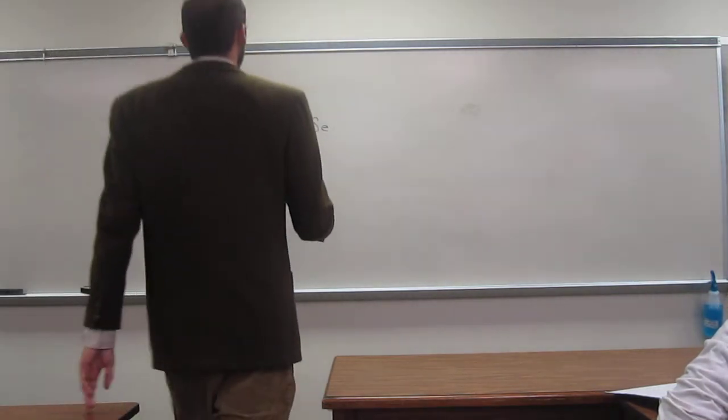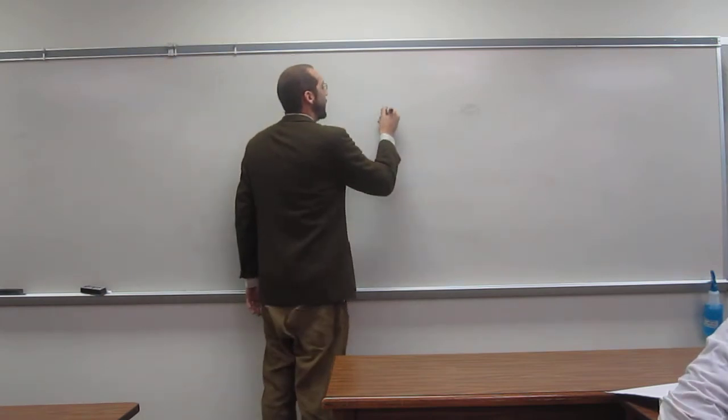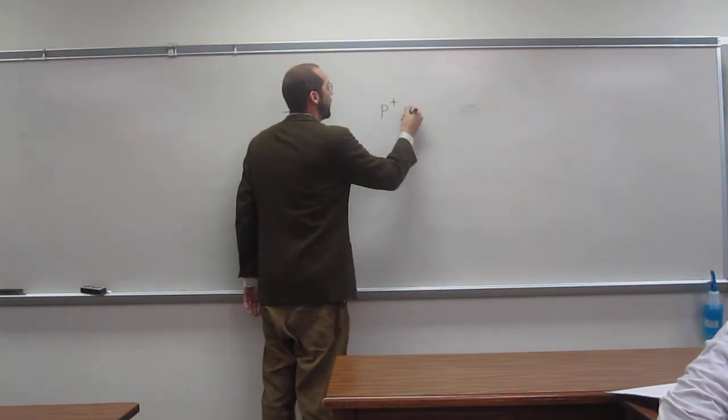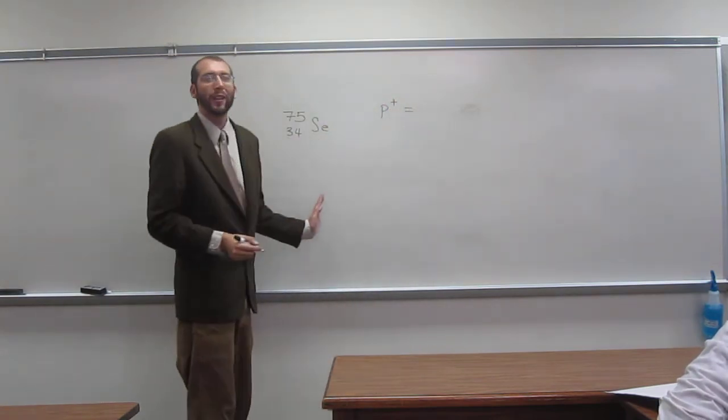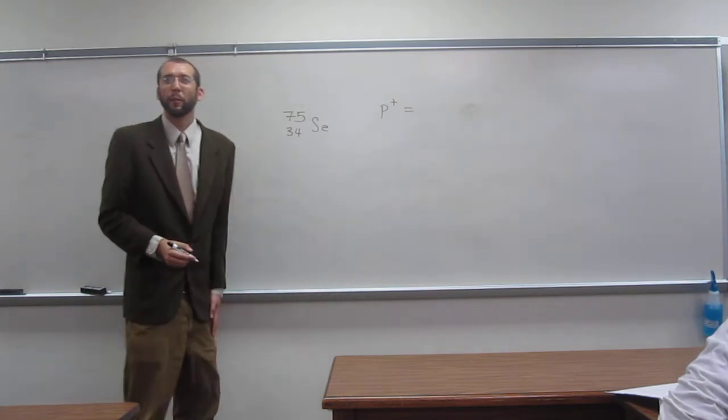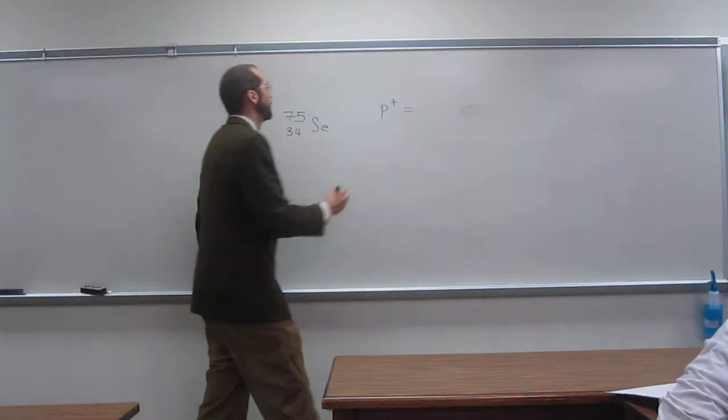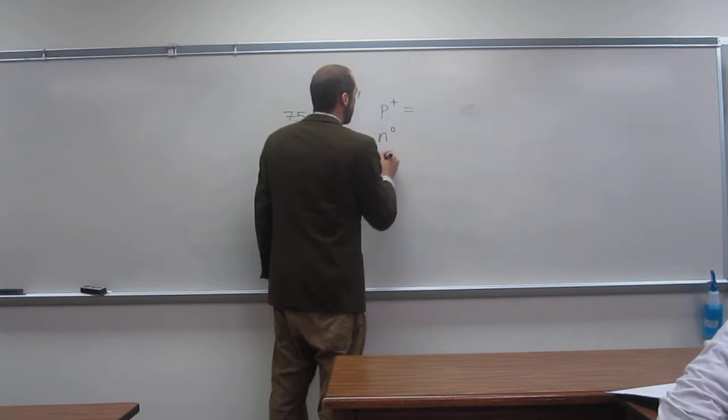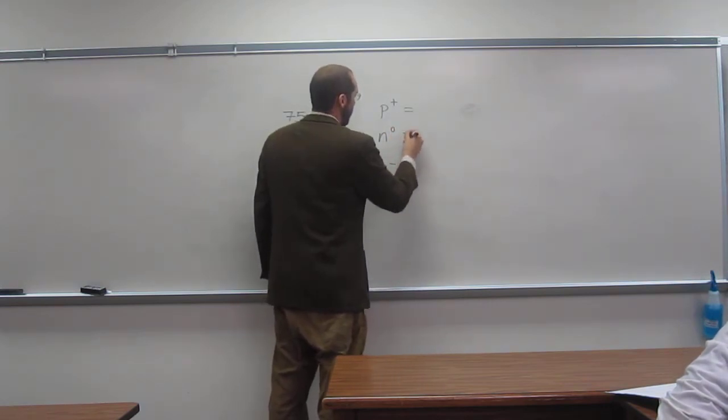Okay, so this one I think is pretty straightforward because the atomic number is given to us. We don't even have to look at the periodic table at all. So protons, neutrons, and electrons.